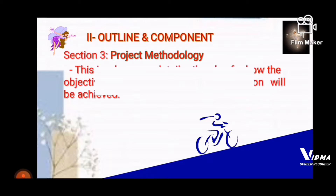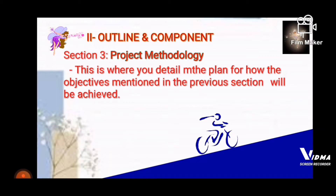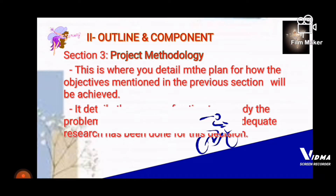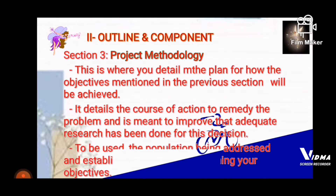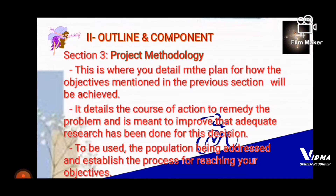Section three is Project Methodology. This is where you detail the plan for how the objectives mentioned in the previous section will be achieved. It details the course of action to remedy the problem and is meant to prove that adequate research has been done for this decision, including the population being addressed and the process for reaching your objectives.